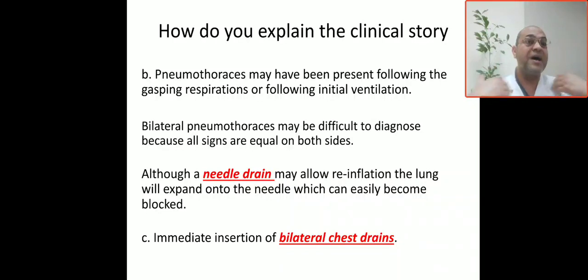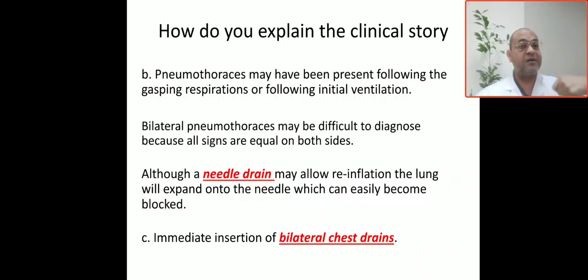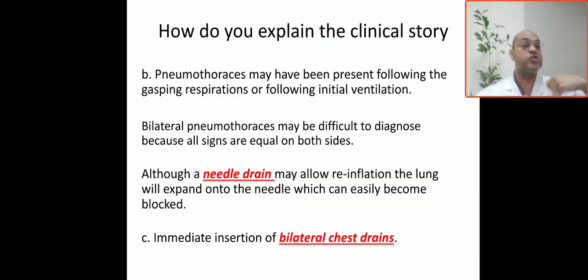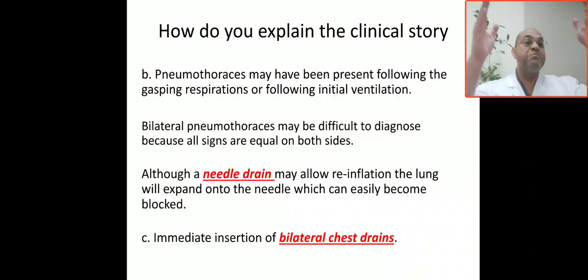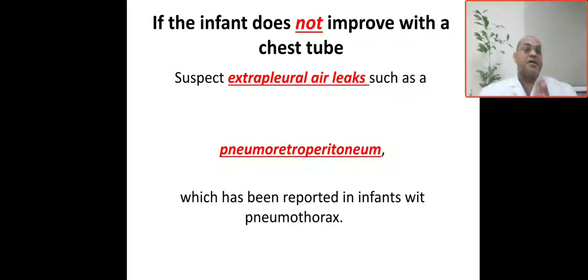The needle drain allows reinflation and expansion of the lung after insertion. However, we cannot keep this needle for long as the small pores can be blocked. The solution is immediate insertion of bilateral chest drains. If the baby does not improve with bilateral intercostal chest tubes, suspect extra-pleural air leaks.